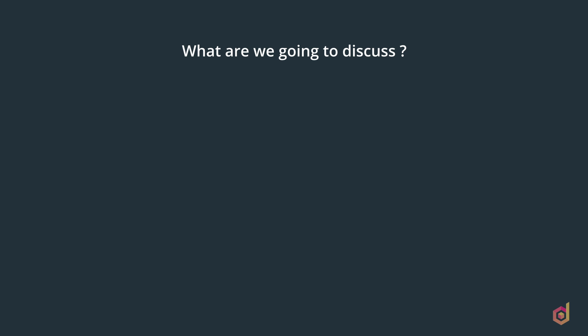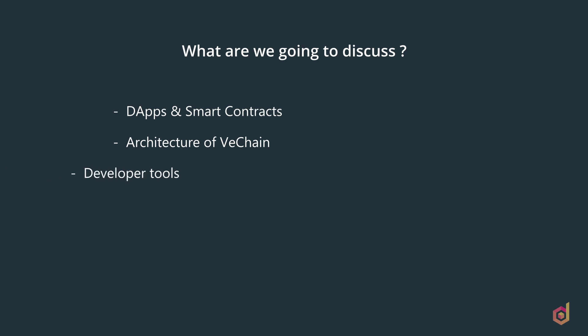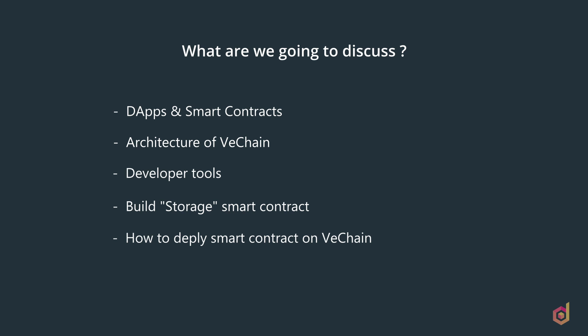So let's see what we're going to discuss in this course. First, we will discuss dApps and smart contracts. Then we will discuss the architecture of VeChain blockchain — it's very interesting. Then the developer tools that are very much needed to deploy a dApp on VeChain. Then we will develop a simple storage smart contract in Solidity. Once the smart contract is done, we will see how to deploy it on VeChain, and then how to set up a project and interact with the smart contract using the Connex library. This will be the front-end part.